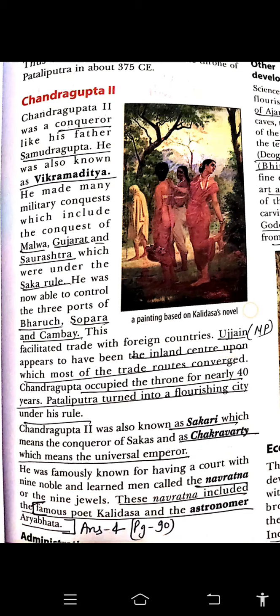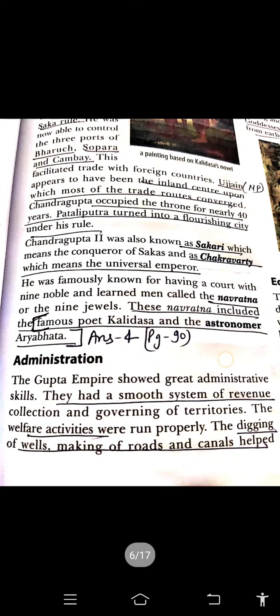We have already read about Chandragupta 2nd. His conquests included Malwa, Gujarat, and Shushrata, which were under Saka rule. He was able to control the three ports of Baruch, Supara, and Kambe. Chandragupta 2nd was also known as Sakari, meaning conqueror of the Sakas, and as Chakravarti, meaning universal emperor. He was famously known for having a court with nine noble and learned men called the Navratna — meaning nine gems — which included the famous poet Kalidas and astronomer Aryabhata.